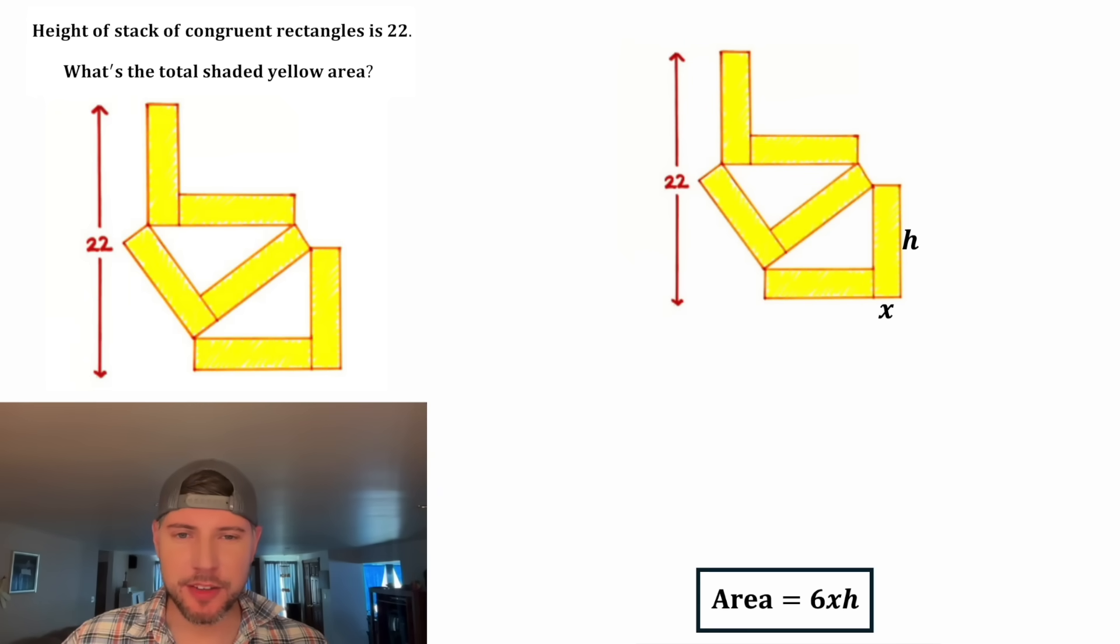And now we've got to find the values of X and H. I think we can do Pythagorean theorem with this right triangle. This little side is X, the longer side is H. This little side is X and this longer side is H. And here's the right triangle.